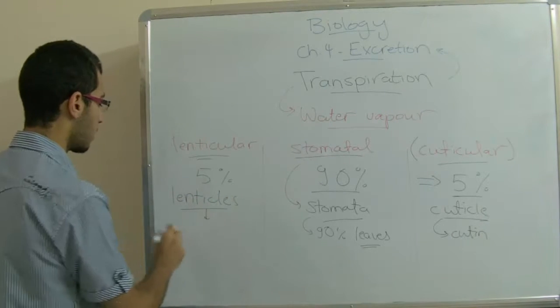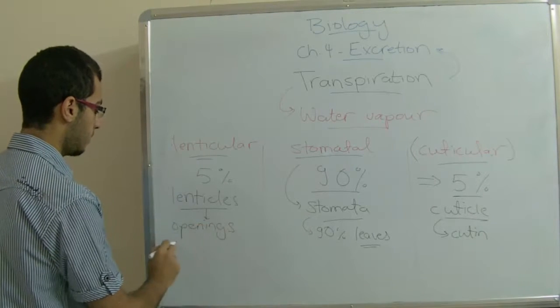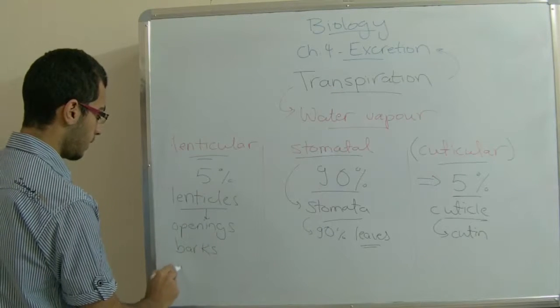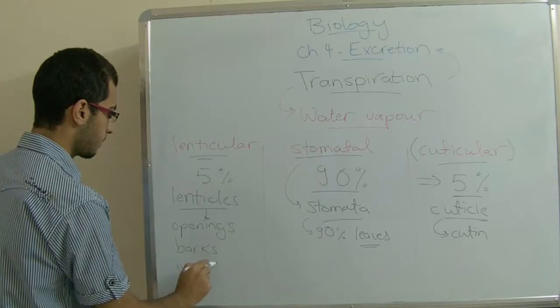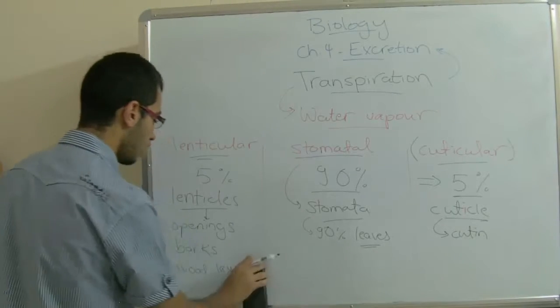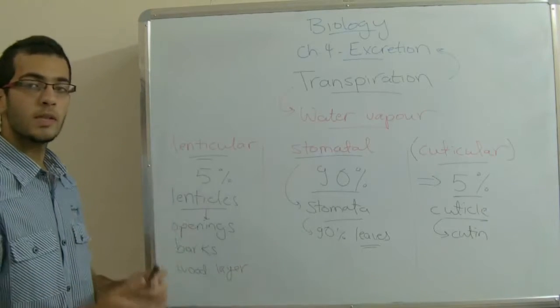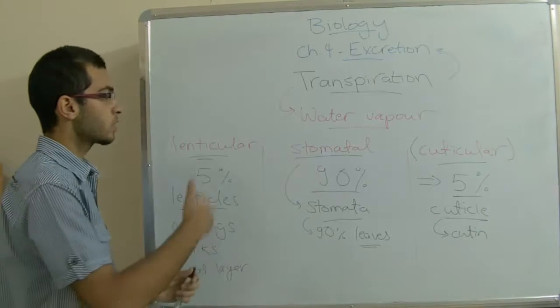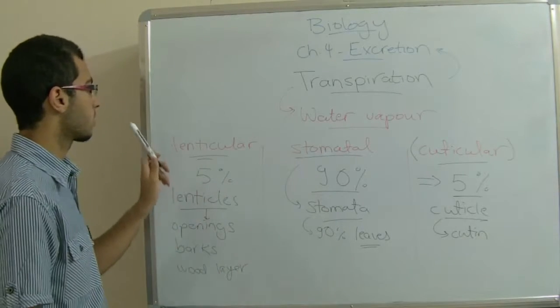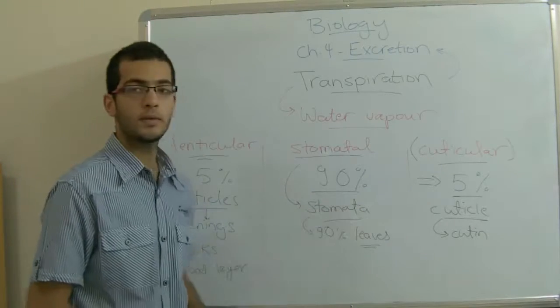And the lenticels are the openings in the bark found in the wood layer which covers the stems of trees. If some water moves outside the plant in the form of water vapor through the lenticels, this is called lenticular transpiration. So these are the three kinds of transpiration.